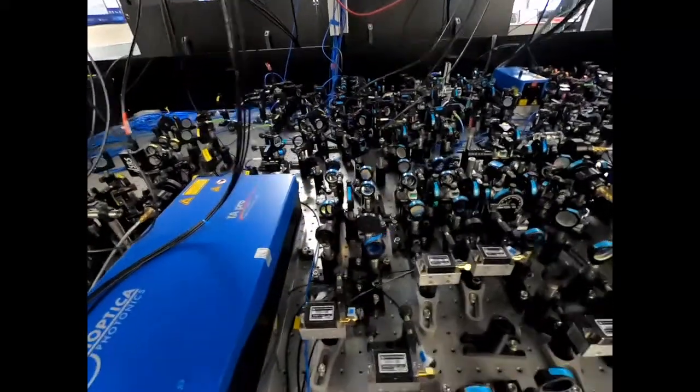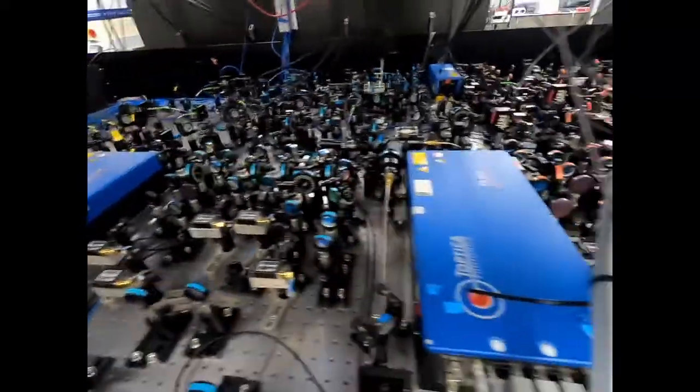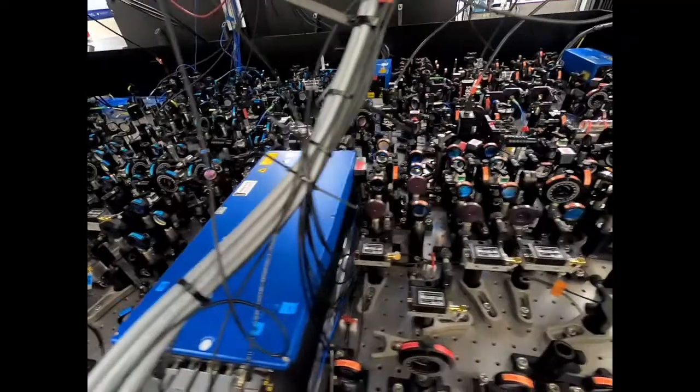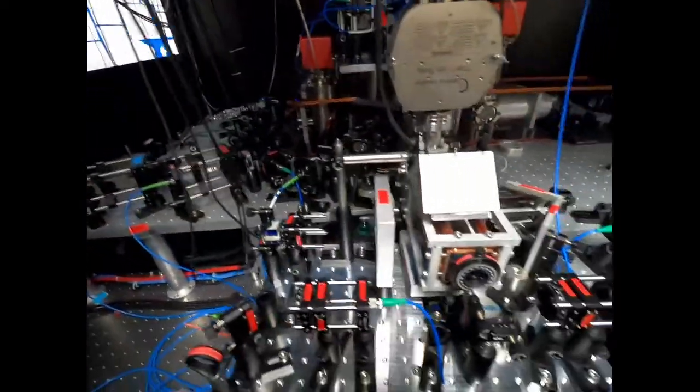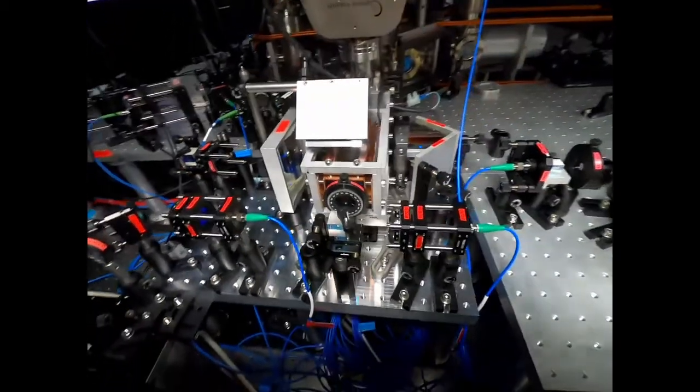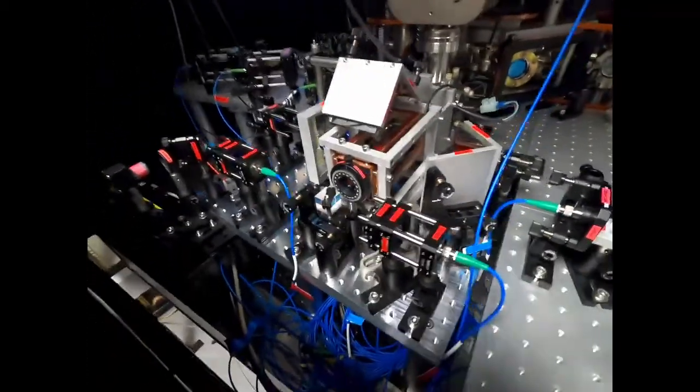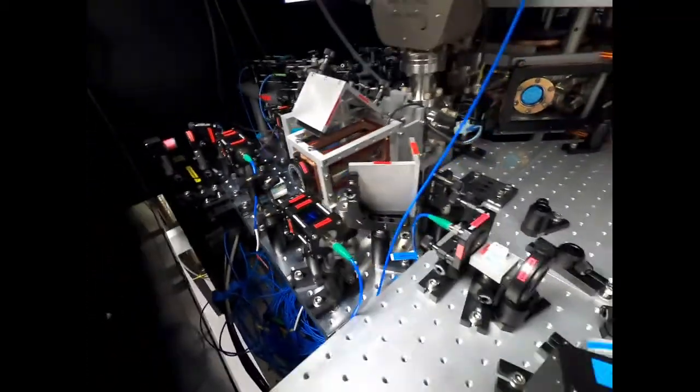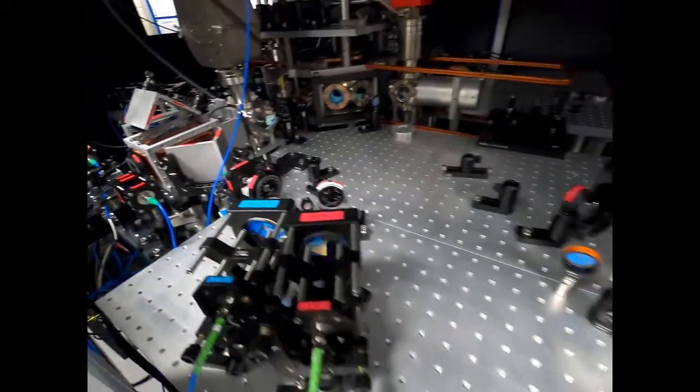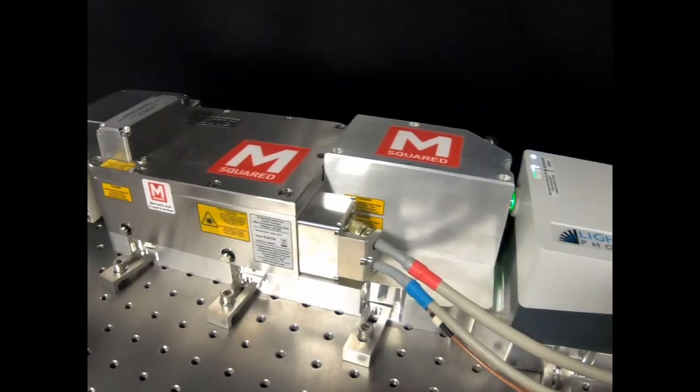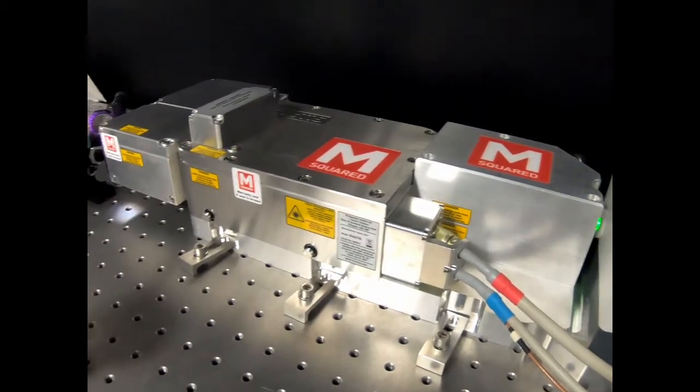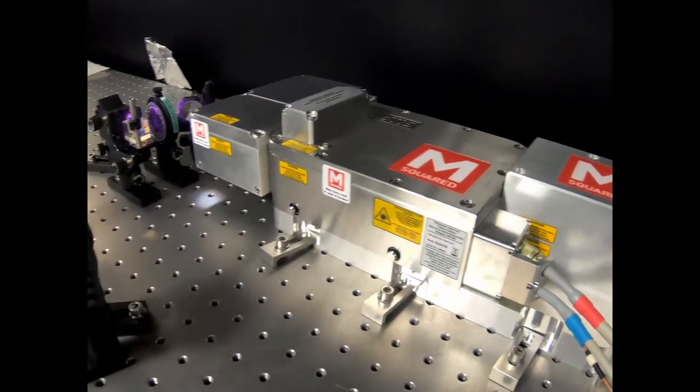To cool our atoms, we use a system of lasers, shown here. If we shift the laser frequency slightly away from the atomic resonance, the Doppler effect will allow atoms moving towards this beam to see light at a resonance frequency again. Only atoms moving towards the laser will feel the recoil kicks from absorbing photons, and so on average, the velocity towards this laser is reduced.